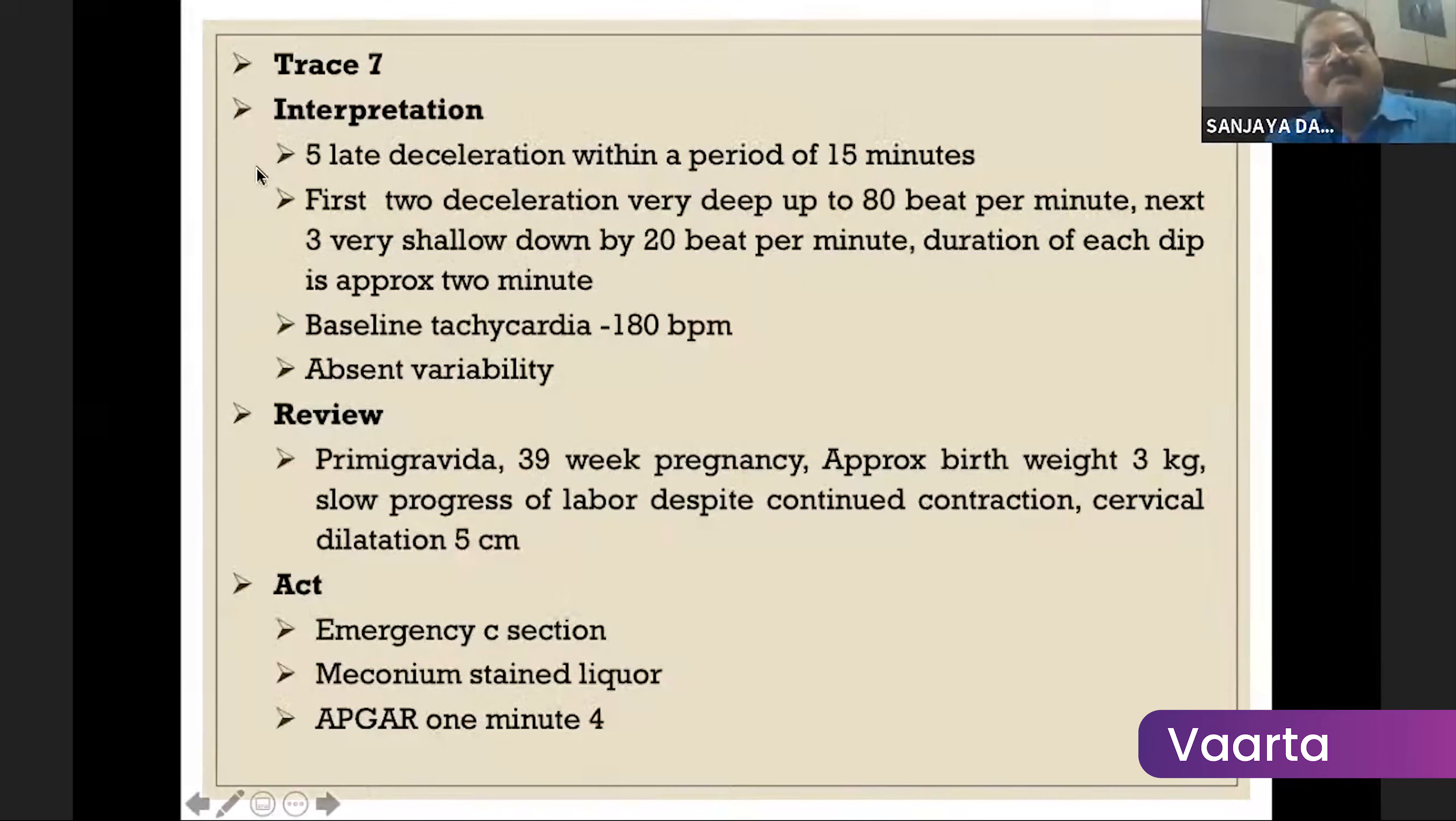This is a primigravida of 39 weeks and emergency c-section was done for meconium stained liquor with an APGAR score of four. You have rightly taken the decision.